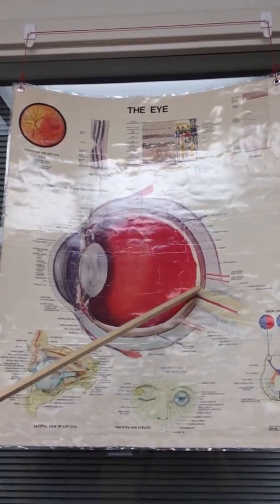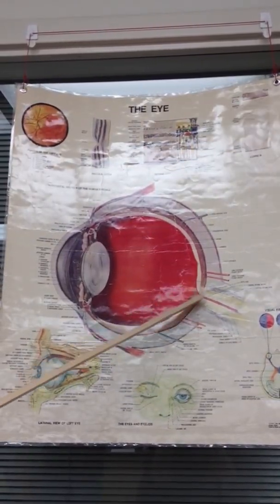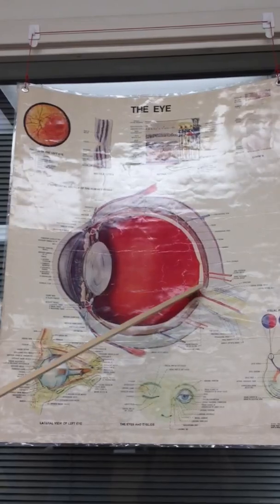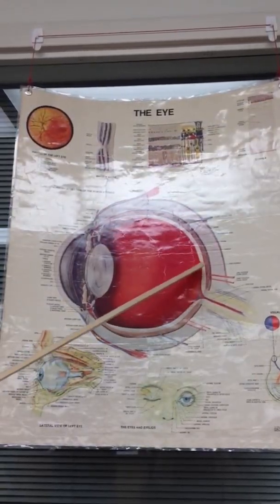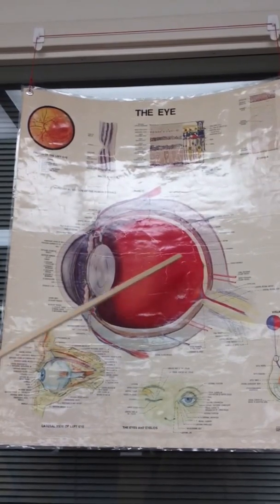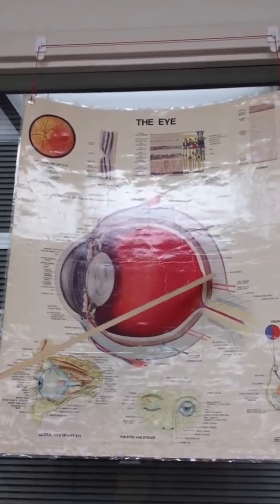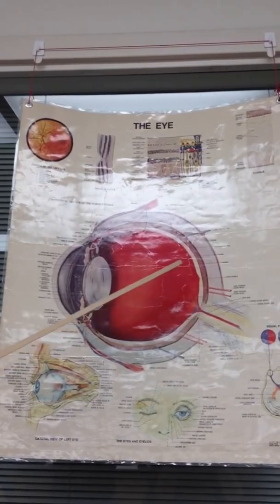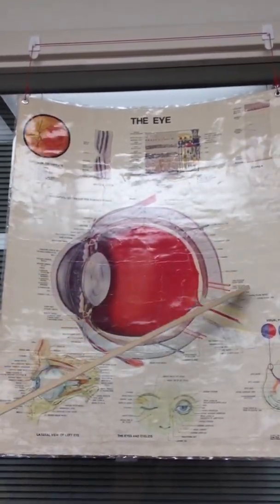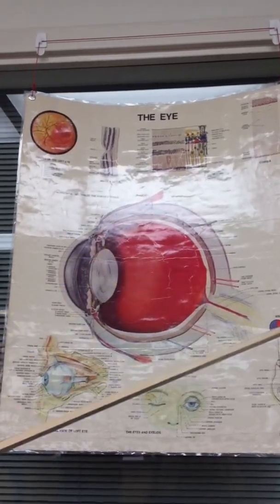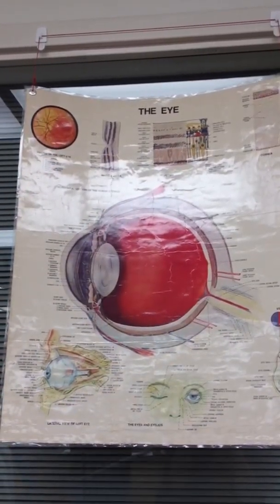Where the optic nerve meets the retina is the optic disc — that's the blind spot. The fovea centralis is the area of greatest visual acuity — where light comes in and you have your best vision. If light focuses too far or too close, that's either nearsightedness or farsightedness — myopia or hyperopia.